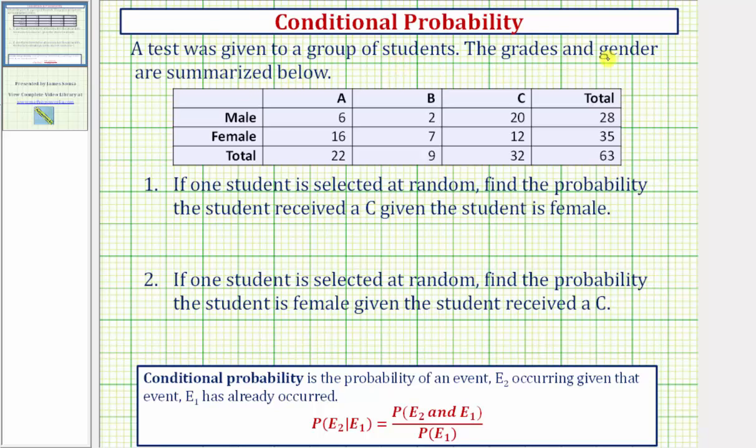A test was given to a group of students. The grades and gender are summarized below. And we're asked to determine two conditional probabilities.